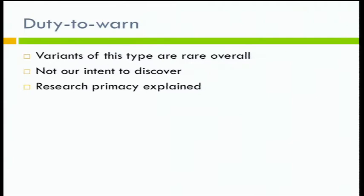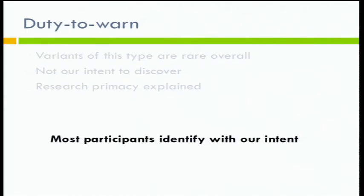We talk about the duty to warn as the idea that we want to leave the door open for some kinds of variants that we would really like to return to them regardless of whether they've given us permission. It's a fine balance talking to participants about these kinds of variants — things like breast and ovarian cancer variants. The goal is not to alarm them; these variants are rare overall. It's not our intent to discover this kind of information, but it's sometimes really impossible to predict who these variants will show up in, particularly with some of the cancer pedigrees. So it's important to alert participants to this possibility. Most participants identify with this intent and are very comfortable with the idea that we've left the door open to contact them about a medically actionable variant.